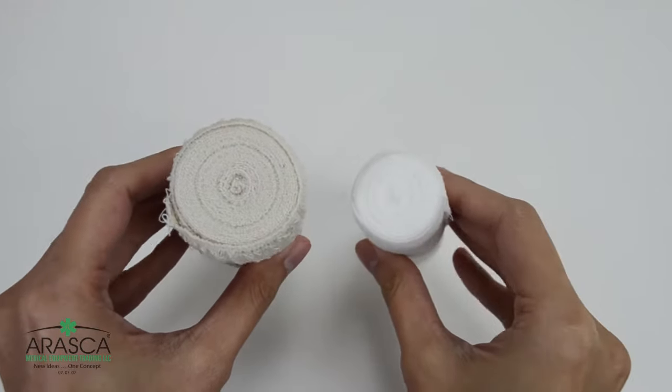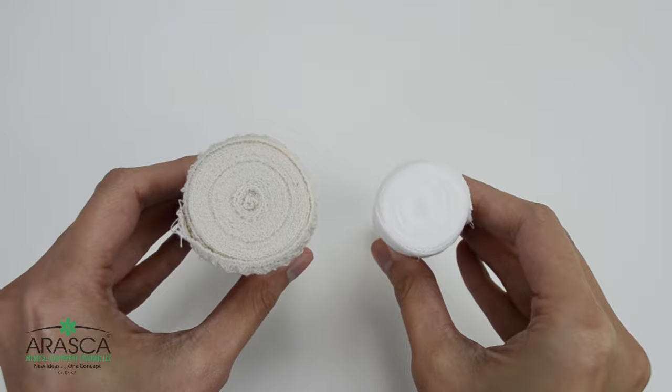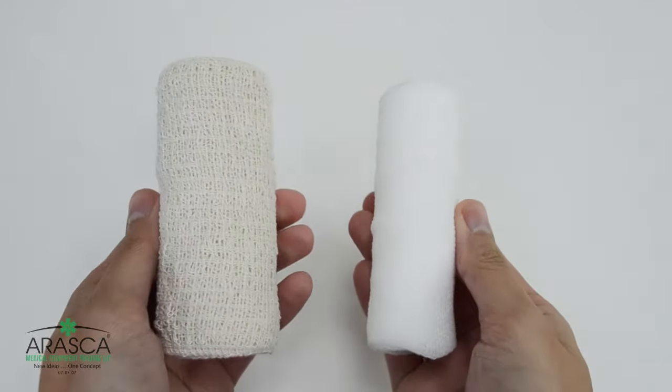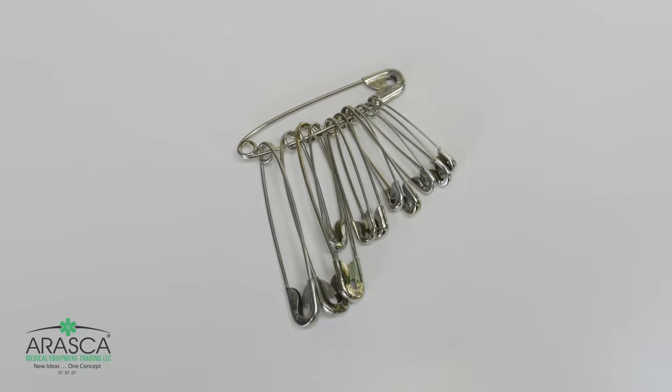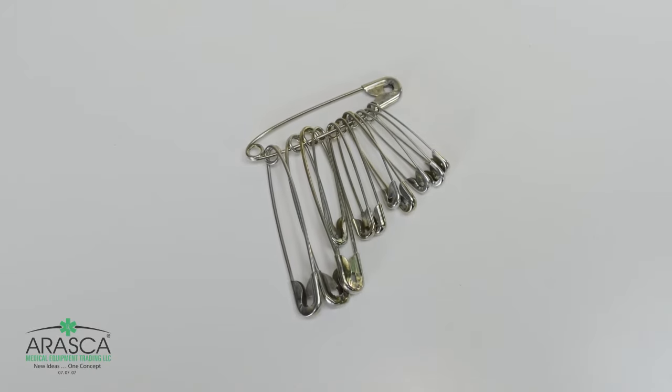Another type is the crepe bandage, which is a thicker version of a conforming bandage, ideal for more support and pressure. These bandages are secured with the help of safety pins and clips.